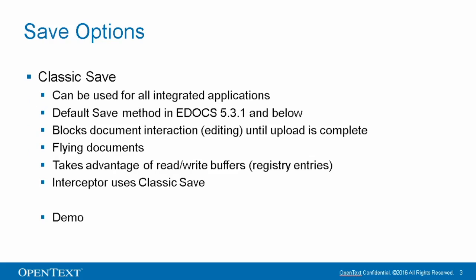Classic save. This save method can be used for all integrated applications. It's the default save method in eDocs 5.3.1 and below. With classic save, document interactions are blocked until the document is finished uploading. In eDocs 5.3.1 P6 and above, we've removed the limit on our rewrite buffers, and classic save takes advantage of those buffers for increased performance.